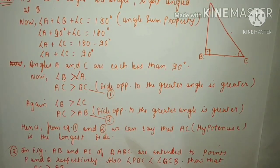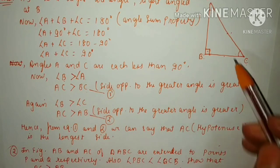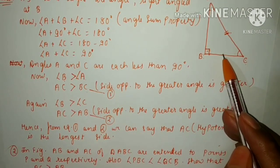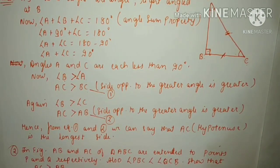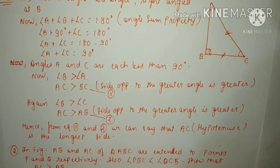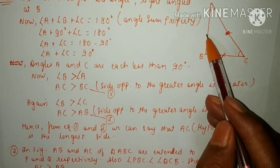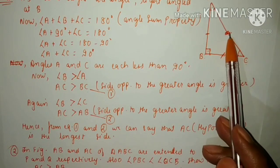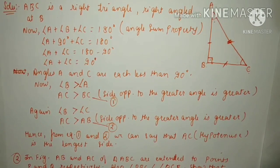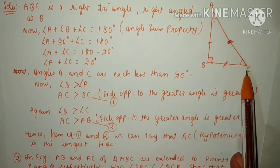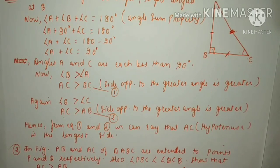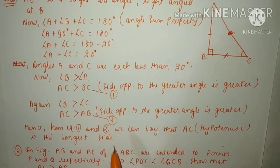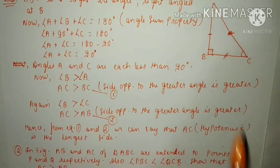From equation 1, AC is greater than BC. From equation 2, AC is greater than AB. So from both equations, AC is greater than both AB and BC. That means AC is the greatest side of this triangle, and AC is the hypotenuse. Hence from equation 1 and equation 2 we can say that AC, the hypotenuse, is the longest side of triangle ABC.